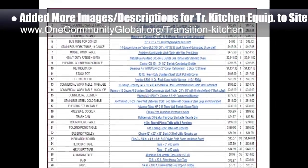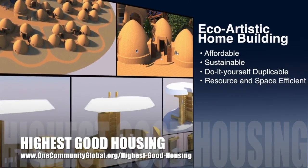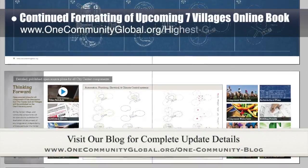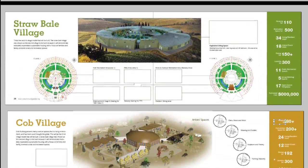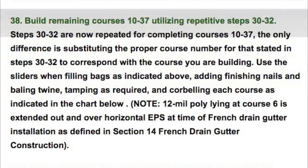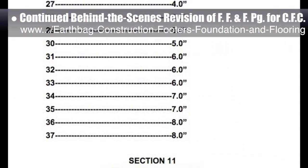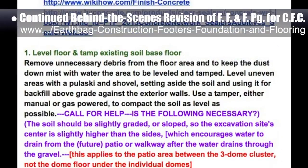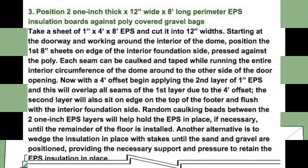One Community's approach to highest good housing is eco-artistic home building that is affordable, sustainable, do-it-yourself, duplicable, resource and space efficient, and consists of seven different sustainably constructed village models. This week the core team continued updating the formatting of the upcoming seven villages online book pages. This week's work focused on updates including cleaned up and new versions of the earthbag village, straw bale village, and cob village presentations. The core team also put another 10 hours into the behind-the-scenes revision for the footers, foundations, and flooring page for the crowdfunding campaign we are developing. We continued the comprehensive review of the FFF doc with the main focus on pages 150 to 154, making updates related to measurements, proofreading, grammar, and sentence structure. We'd say we are now 98% complete with this total update and rewrite.